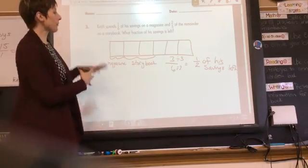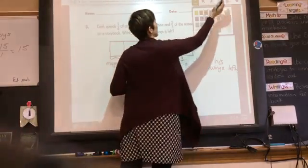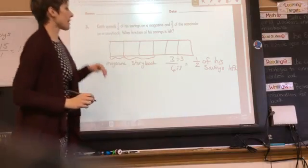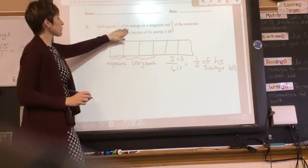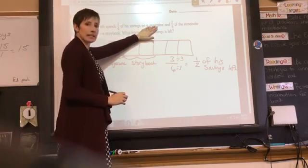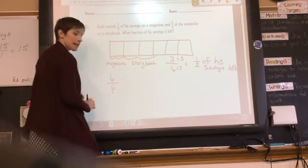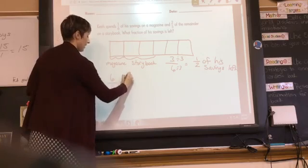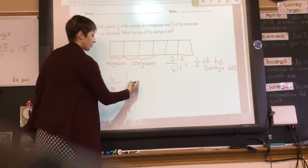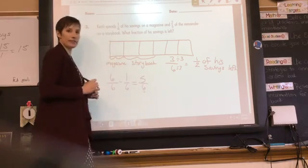Now, I can also solve this problem with math only, if that's the approach you want to take. So, for this story problem, we have Keith spends one-sixth of his savings on a magazine. We're going to start with the whole amount of savings, which we could call six-sixths, and subtract the one-sixth away, which means he has five-sixths left.